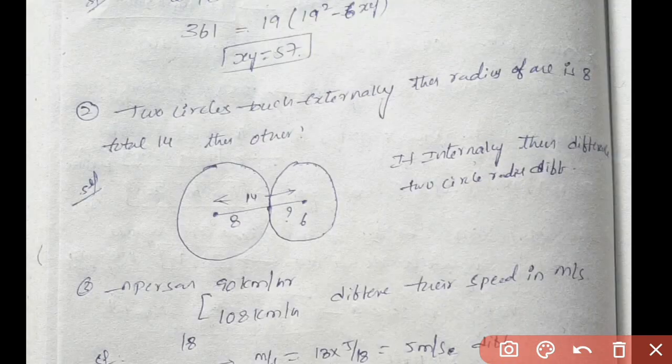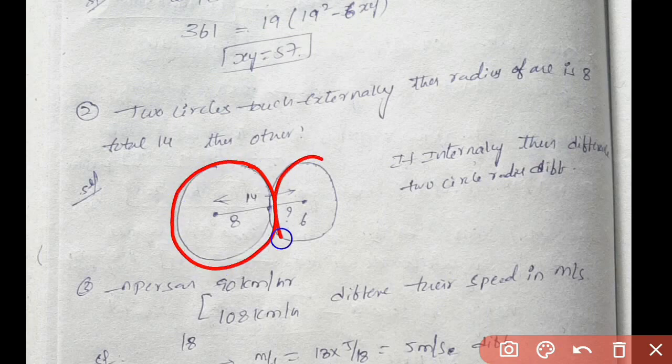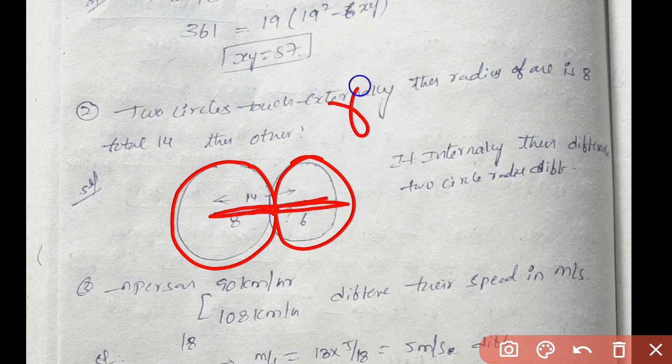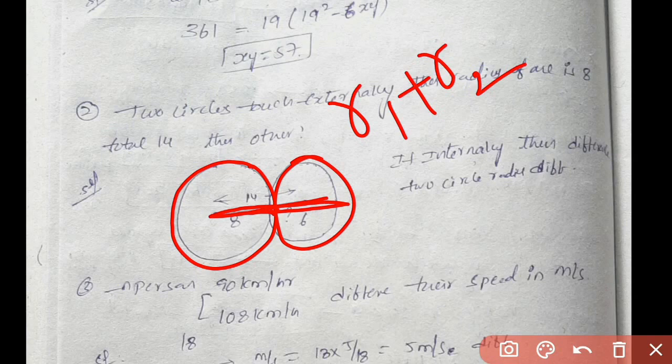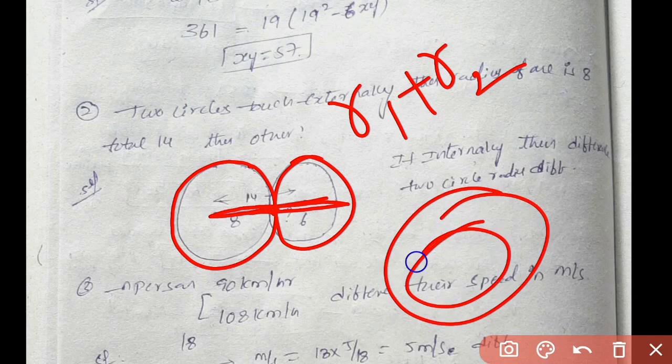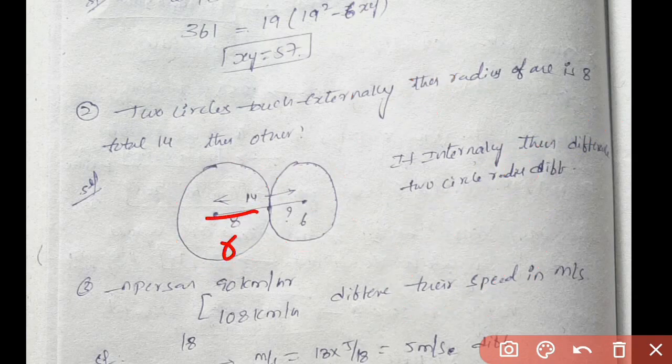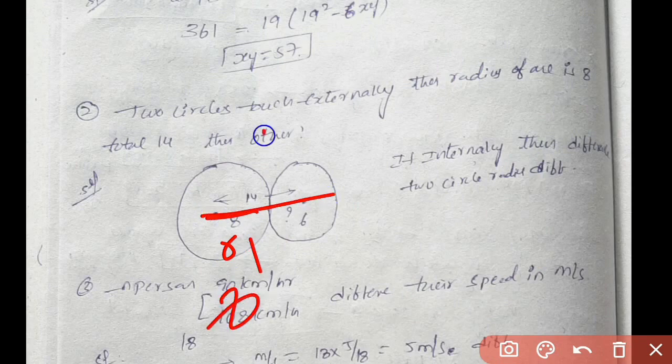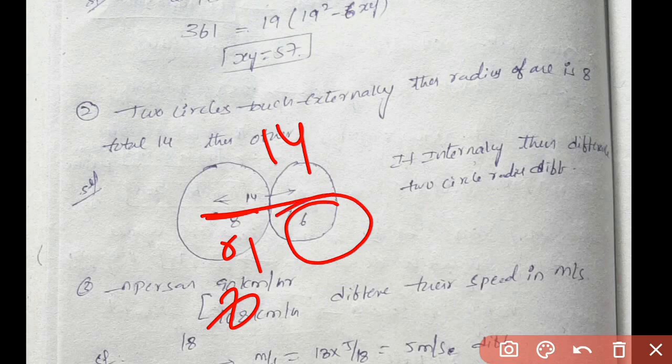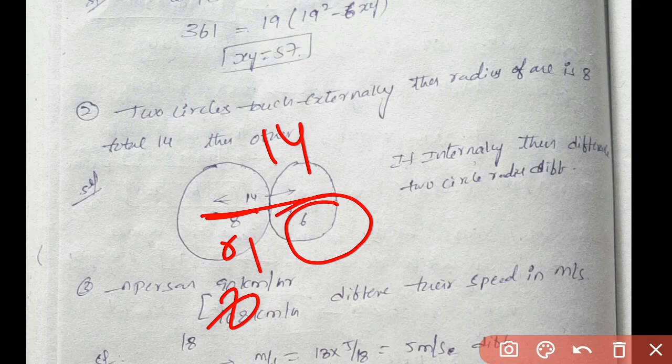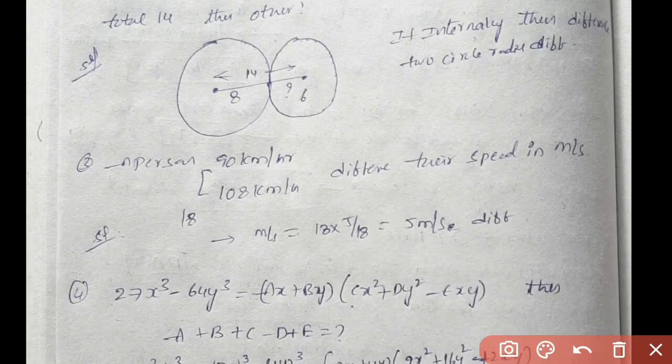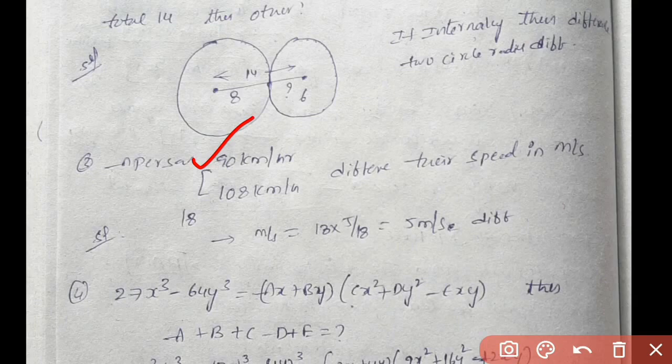Two circles externally touch at one point. Centers distance: radius R1 plus R2. Internally touch: R1 minus R2. Here radius R1 is 8cm, total is 14. So 14 minus 8 is 6, R2 radius. Externally: R1 plus R2, internally: R1 minus R2.